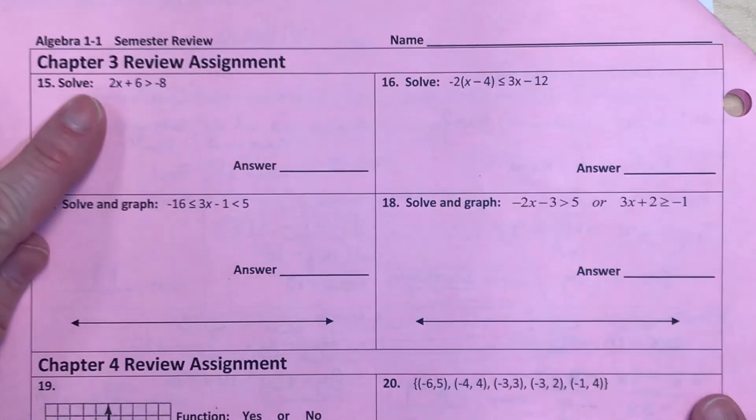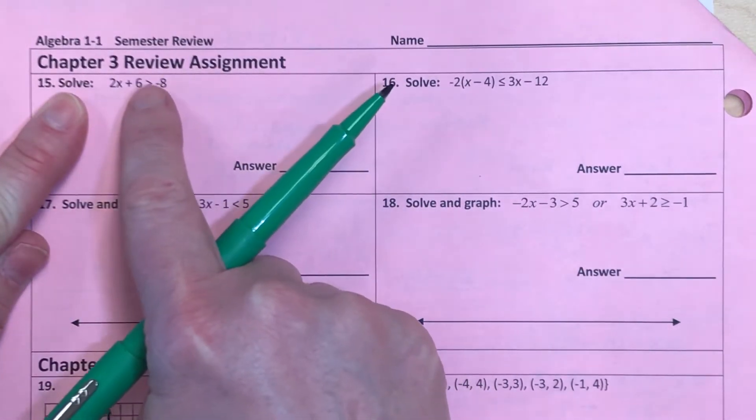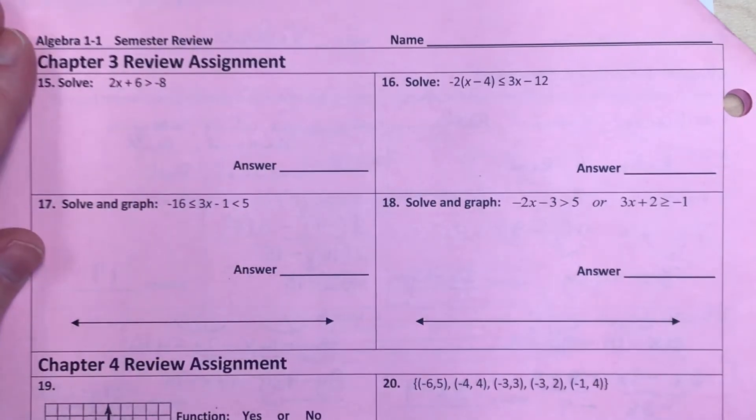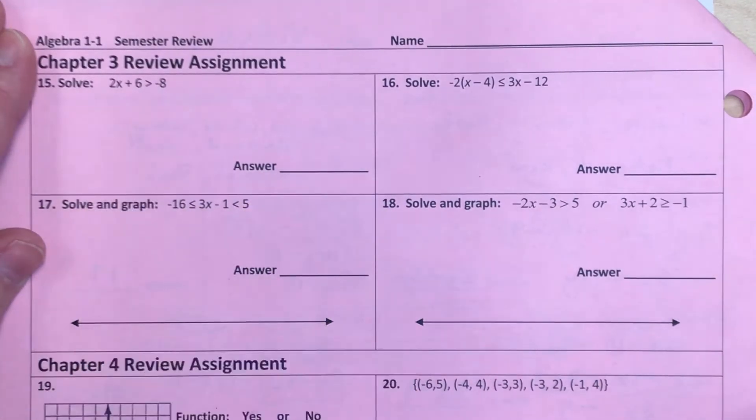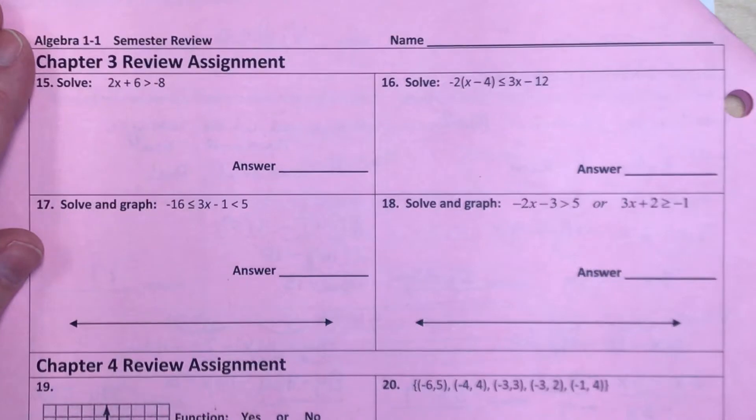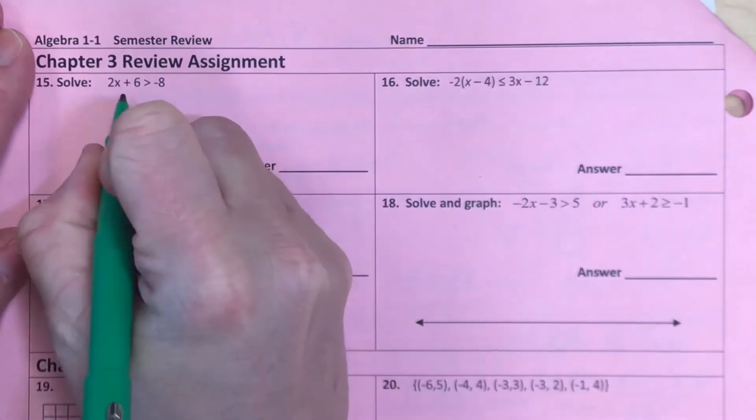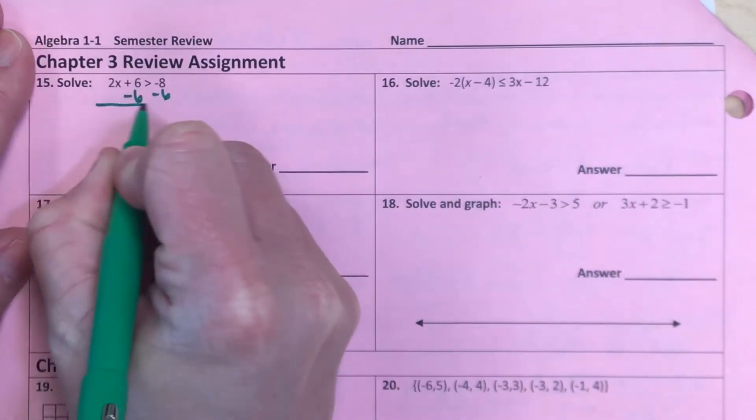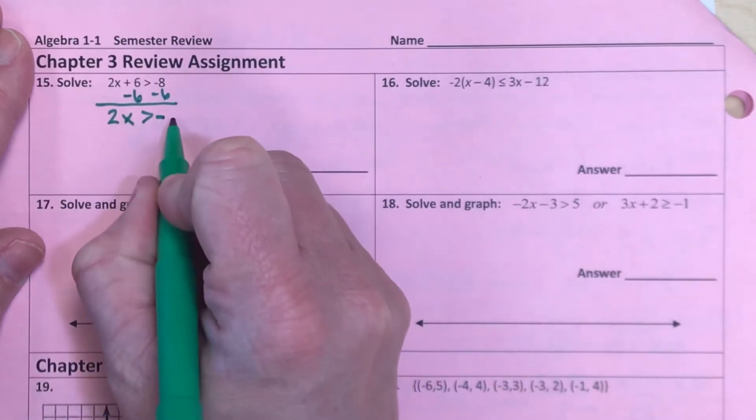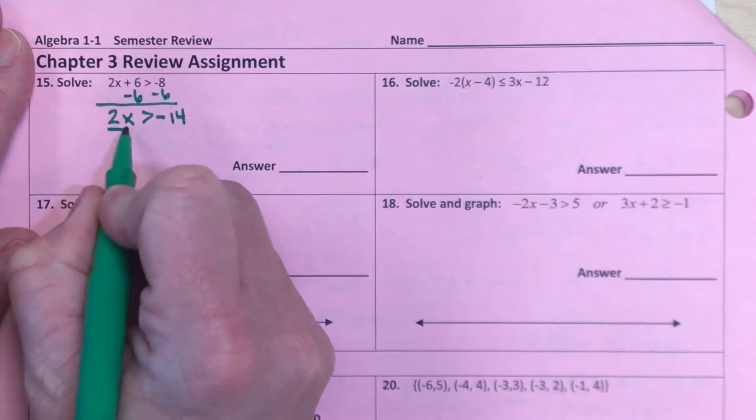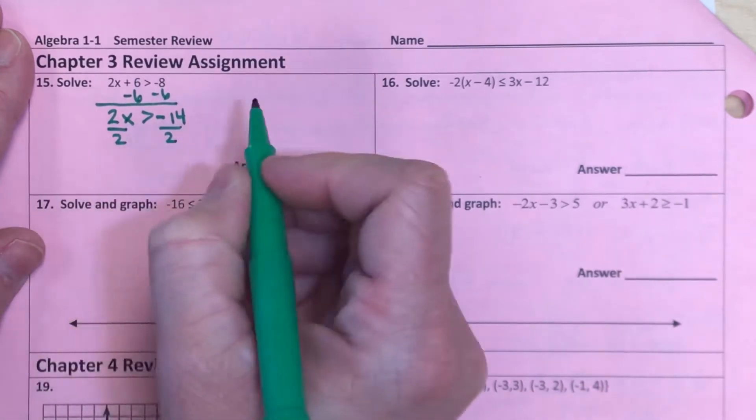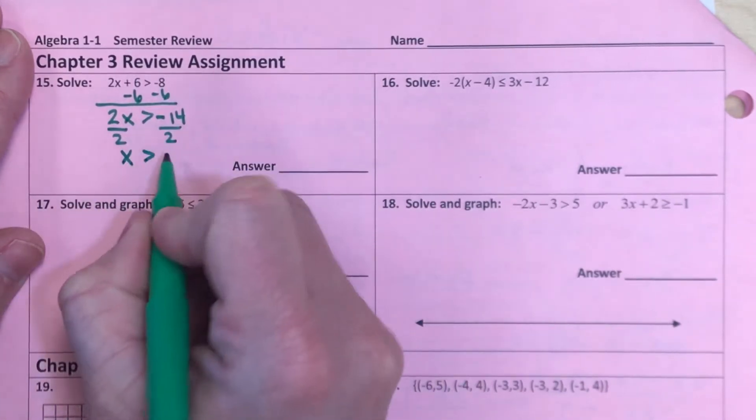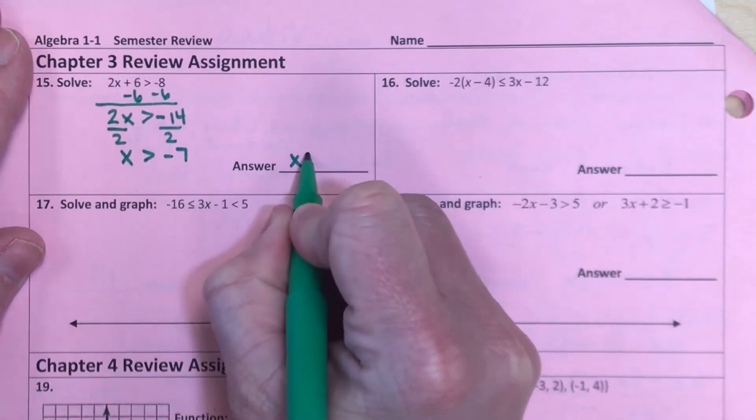So for the first inequality, you solve it much like you would if there was an equal sign here instead of a greater than sign. And so you're going to isolate your x like we normally would, and we're going to do that by subtracting 6 on both sides. So now we have 2x is greater than negative 14. And if I divide by the number 2, I would have x is greater than negative 7. So that's my answer.